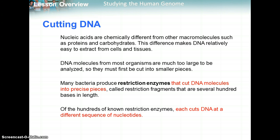With cutting DNA, nucleic acids are chemically different from other macromolecules such as proteins and carbohydrates. This difference makes DNA relatively easy to extract from cells and tissues. DNA molecules from most organisms are much too large to be analyzed, so they must first be cut into smaller pieces. That's done by things called restriction enzymes. They cut DNA molecules into precise pieces called restriction fragments that are several hundred bases in length. Of the hundreds of known restriction enzymes, each cuts DNA at a different sequence of nucleotides.